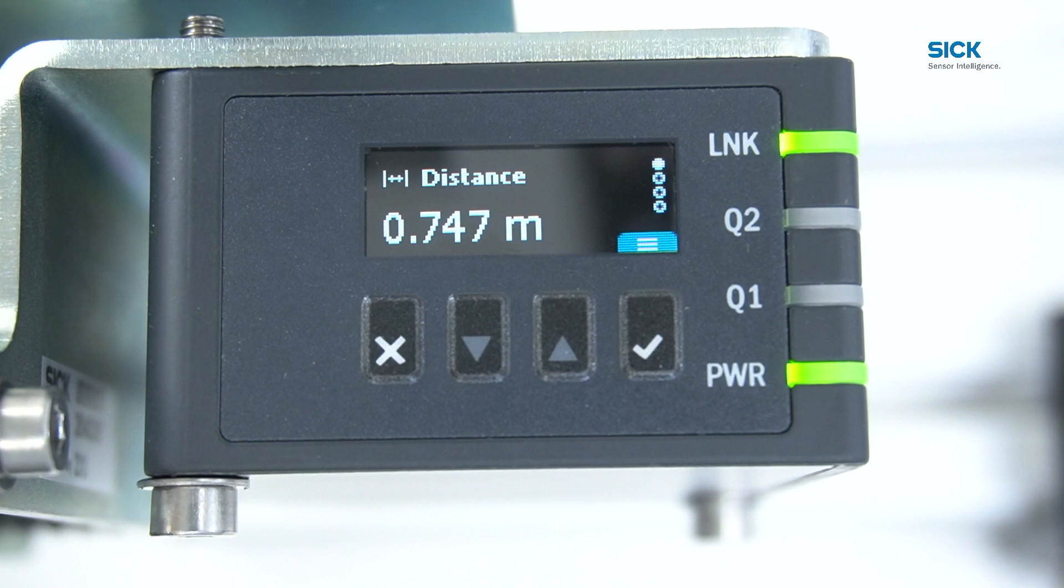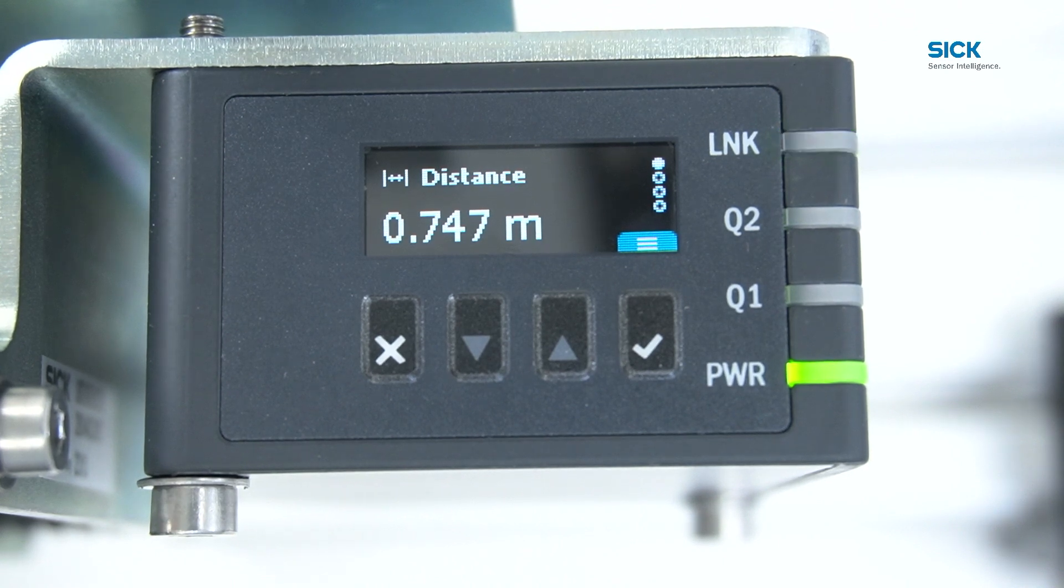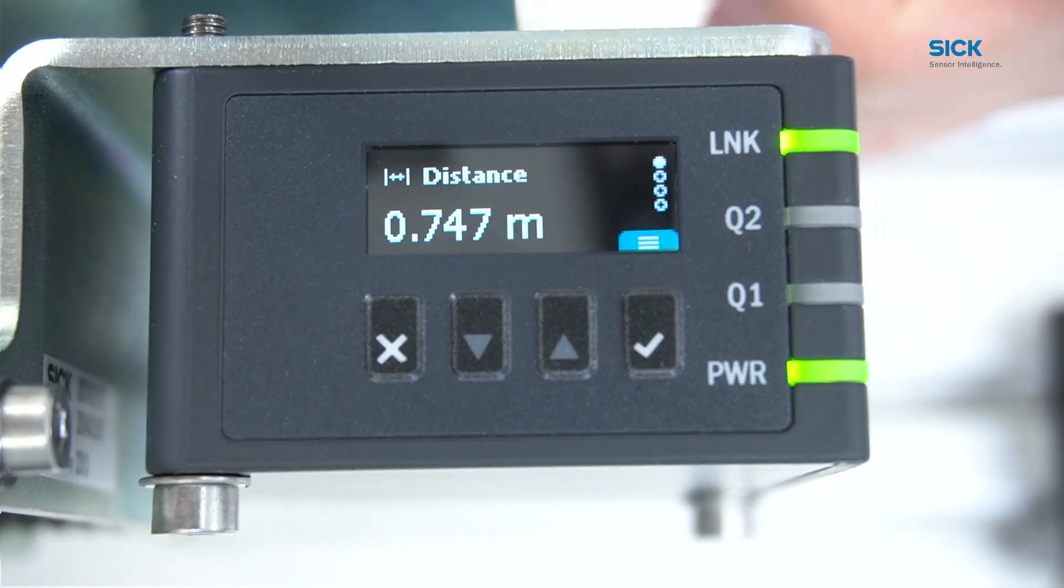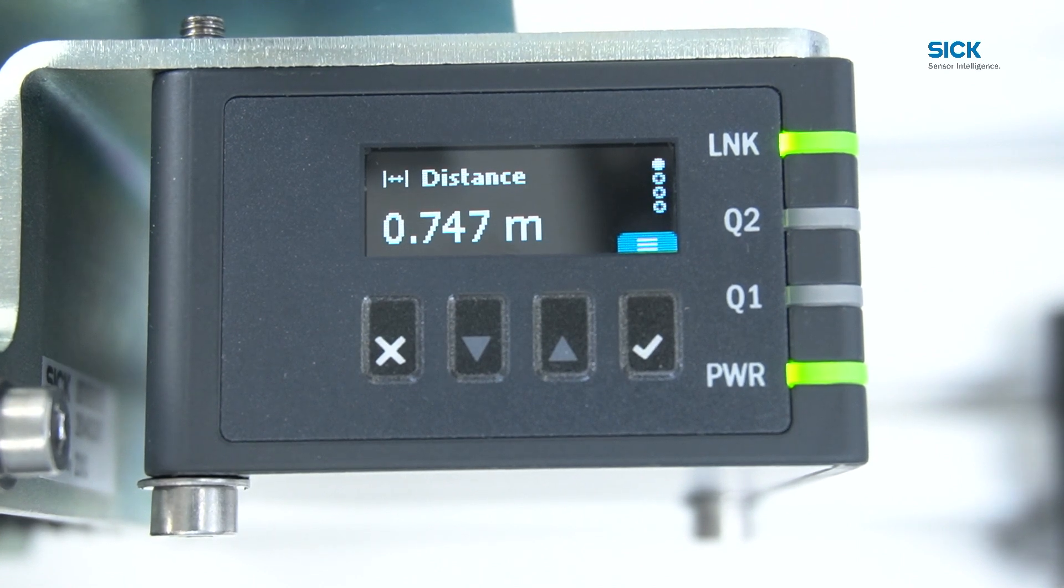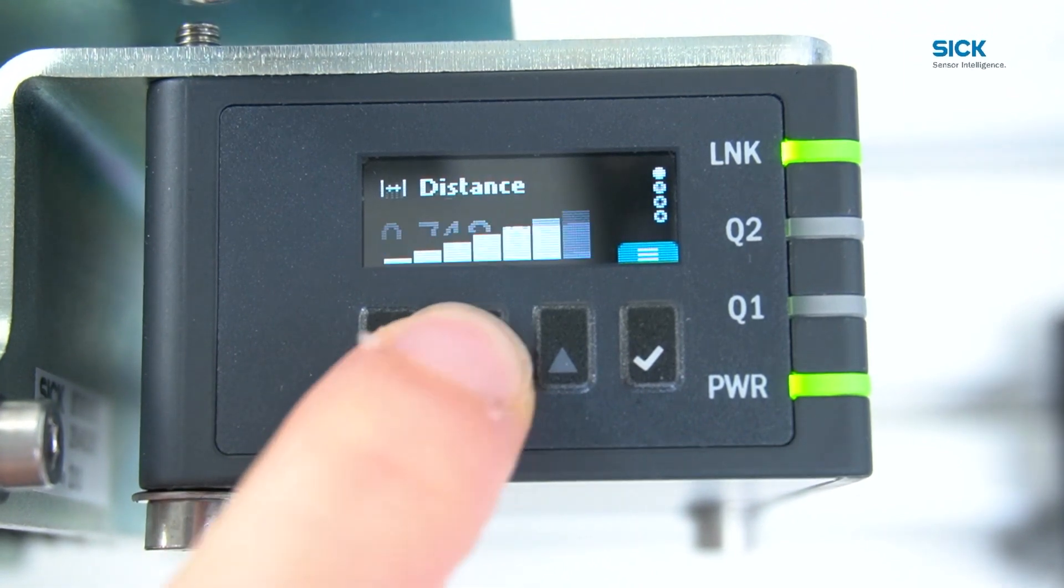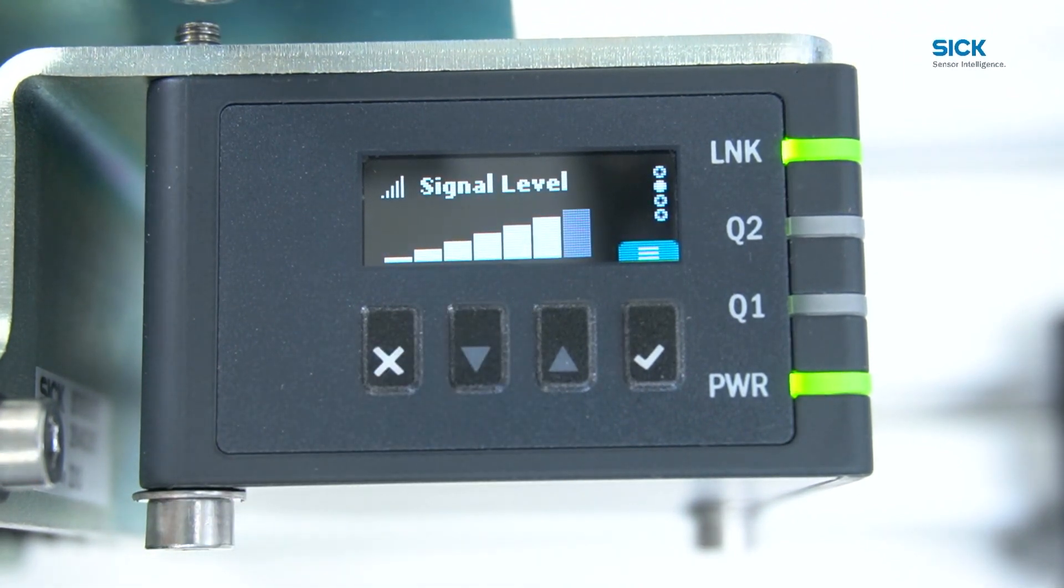The remaining two LEDs indicate the status of the switching outputs Q1 and Q2. On the DD80's home screen, you have the ability to navigate through four different displays. By pressing the down button, you can easily transition to the next screen.